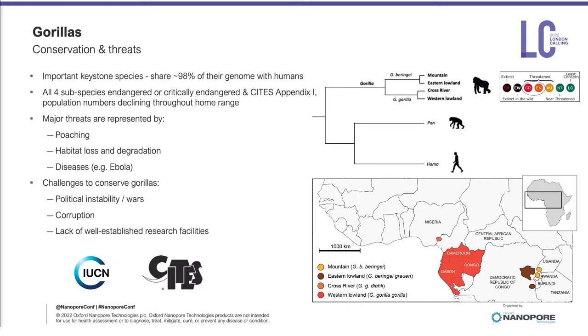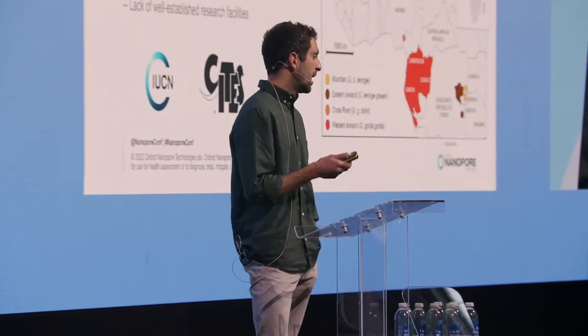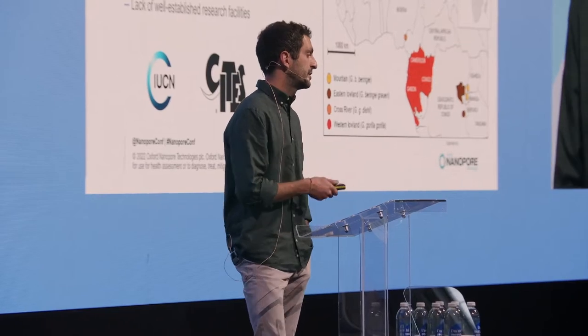The combination of threats such as poaching, habitat loss and fragmentation, and disease, in combination with challenges to their conservation like political instability in the countries of origin, corruption, and the lack of well-established research facilities, are really driving their numbers down to worrying levels.